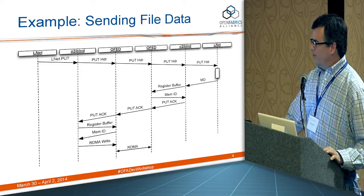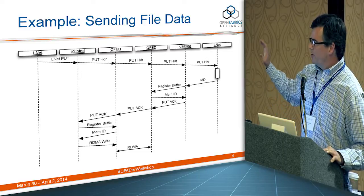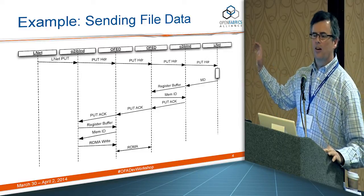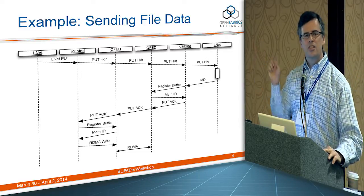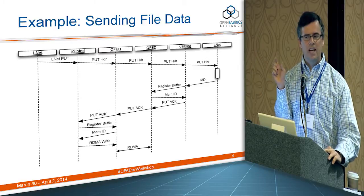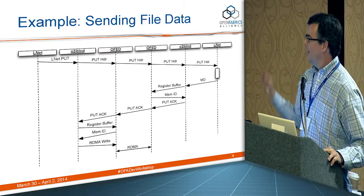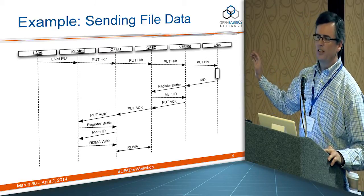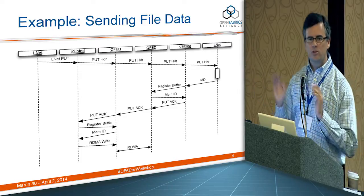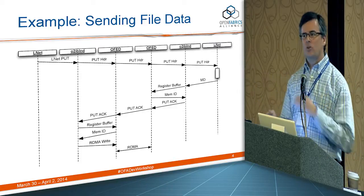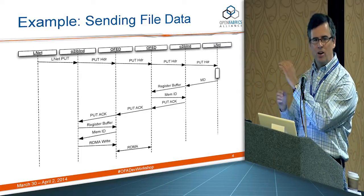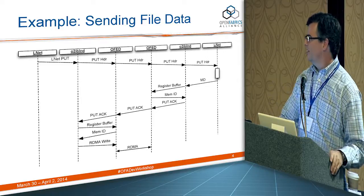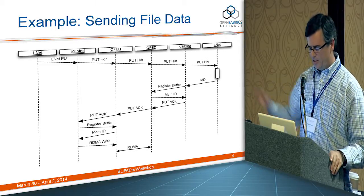There are two kinds of messages in this pattern: unsolicited small LNET headers thrown back and forth, and solicited RDMA operations which are presumably larger. So we have both small and medium-sized messages in this characteristic pattern.